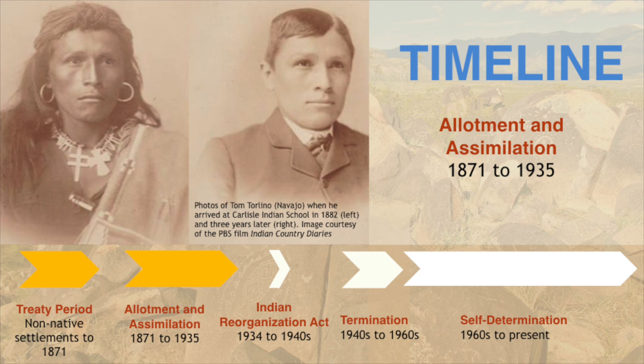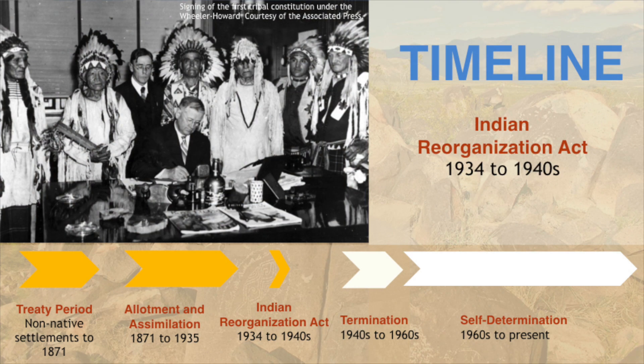During this time, the federal government sponsored efforts to assimilate Native Americans into mainstream society. Many Native American children were sent to boarding schools, where they were prohibited from using their tribal languages and traditional practices. The Indian Reorganization Act of 1934 ended the allotment of reservations and ensured that any allotment still held in trust for individual Indians could not be sold. It also provided a means for formalizing tribal governments through written constitutions or charters, and many tribal constitutions were adopted during this period, also requiring U.S. government approval for federal recognition.